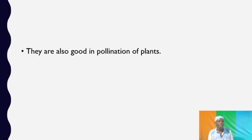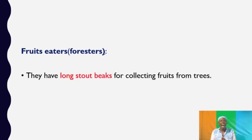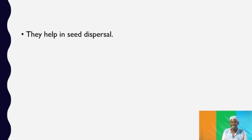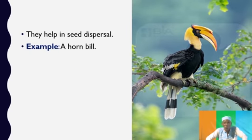Fruit eaters. The fruit eaters are also known as frugivores and they feed on fruits. They have long stout beaks for collecting fruits from trees and they also help in seed dispersal. An example of a fruit eater is a hornbill.